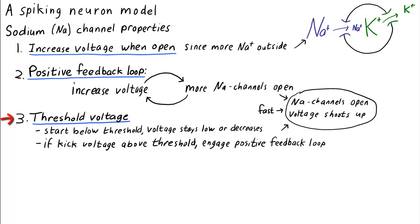Only if the voltage is somehow kicked above threshold, say due to input from other neurons, is the positive feedback loop engaged and the voltage shoots up fast.